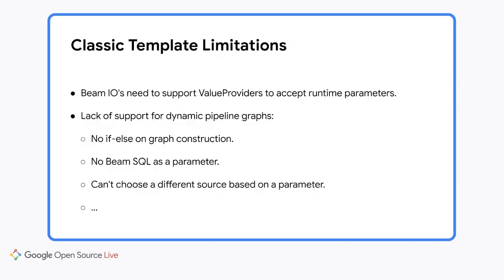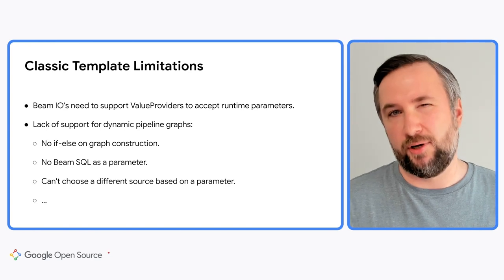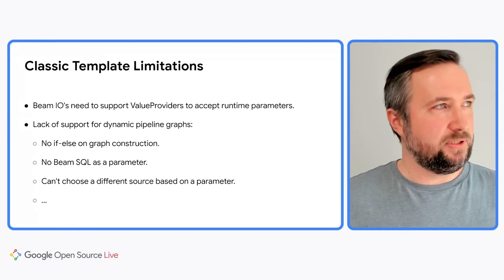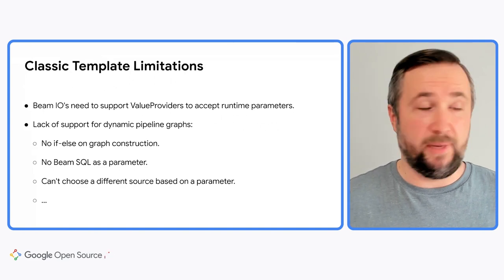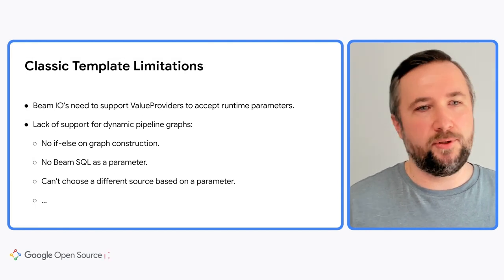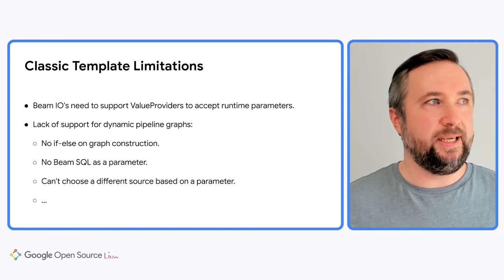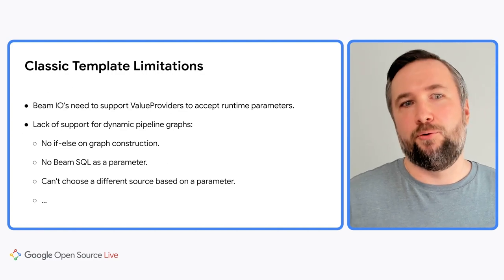Classic templates have a number of limitations. The main one is that you need to add value providers everywhere — not just in your custom pipeline code, but also the Beam I/Os that come with Beam SDK out of the box. They also must support these value providers, and not all of them do. Second is lack of support for dynamic pipeline graphs. For example, if you want to make your pipeline dynamic depending on a parameter — like if a parameter is set to A you want to use one source, but if it's set to B you want to use another source — you cannot do that because at the time when you construct the pipeline using Beam SDK, you do not know yet the value of this parameter.